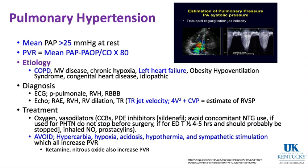Pulmonary hypertension, by definition, is a mean pulmonary artery pressure greater than 25 millimeters of mercury at rest. Pulmonary vascular resistance can be calculated by knowing the mean pulmonary artery pressure, subtracting the wedge pressure, dividing it by the cardiac output, and multiplying by 80 to put it into the proper units.